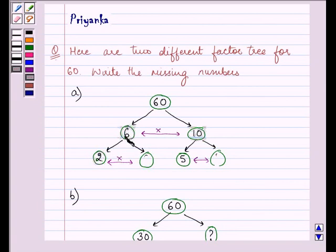So we'll directly divide 6 by this number to get the number which we are looking for. So that comes out to be 3. So the answer to this blank is 3.